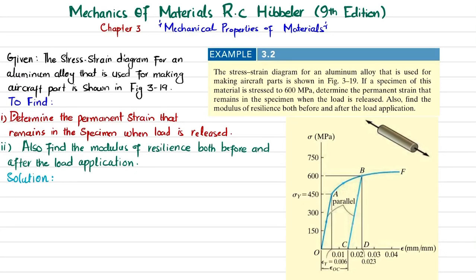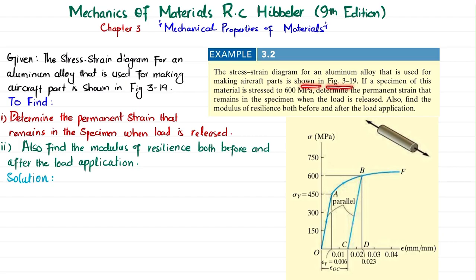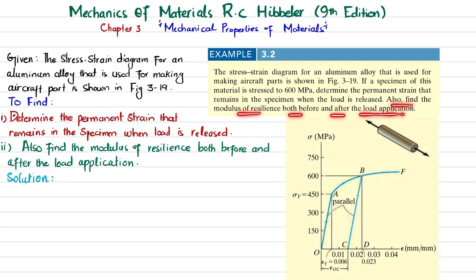Welcome back. In this video we are going to solve example 3.2 taken from chapter 3, Mechanical Properties of Materials, from the book Mechanics of Materials by R.C. Hibbeler, 9th edition. The problem states: the stress-strain diagram for an aluminum alloy used for making aircraft parts is shown in figure 3-19. If a specimen of this material is stressed up to 600 MPa, determine the permanent strain that remains when the load is released, and also find the modulus of resilience both before and after the load application.